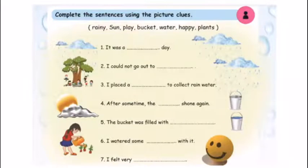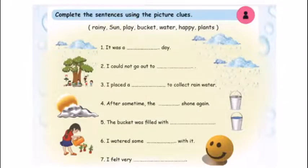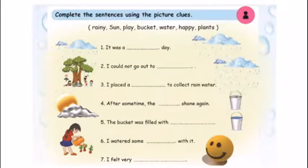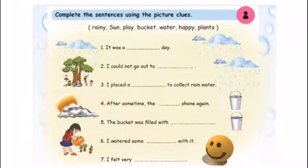Now we have an activity. Complete the sentence using the picture clues. This is a sentence using the blank spaces. We have to write what we have in this space. In the first sentence, it was a dash day. Looking at the picture, this is a rainy day. So, it was a rainy day.